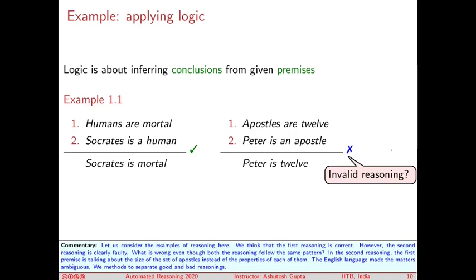You can easily see where the fault is. This 12 is not talking about each apostle, it's talking about the size of the set. This is not talking about the size of the set, it's about the set, not about each individual. That's where things went wrong.